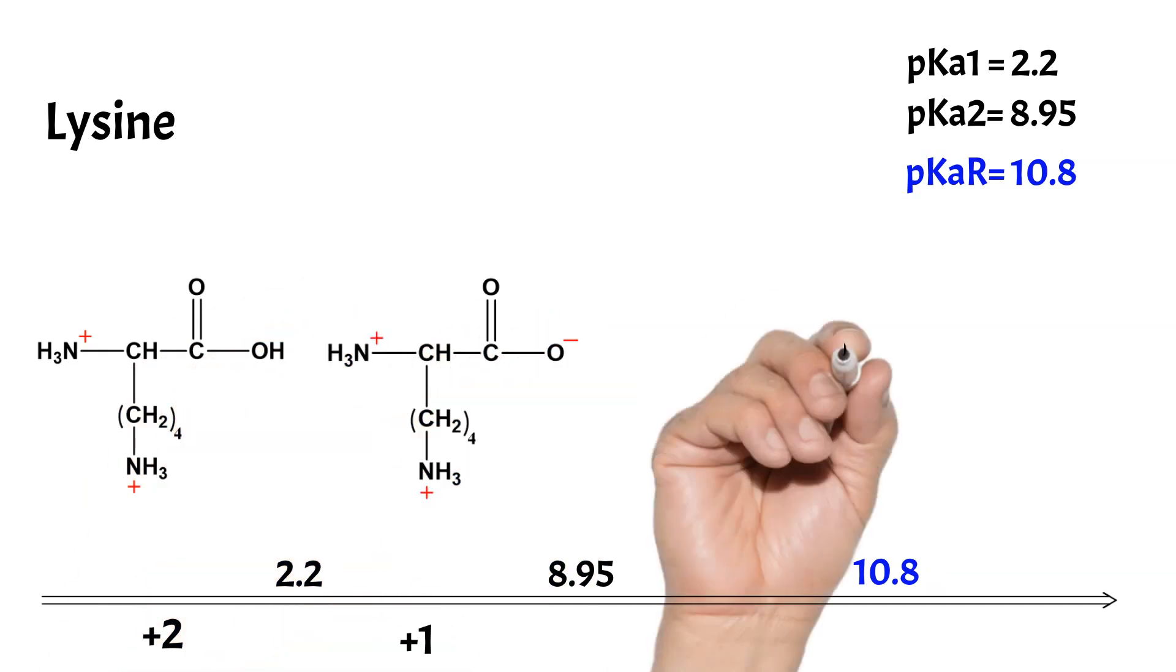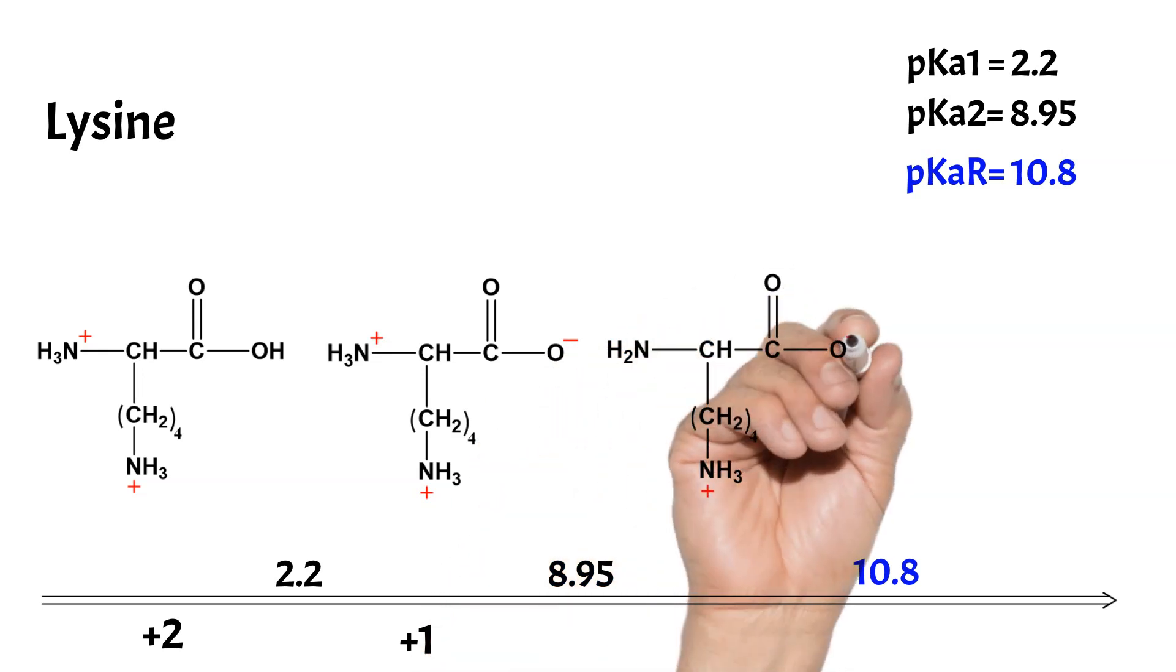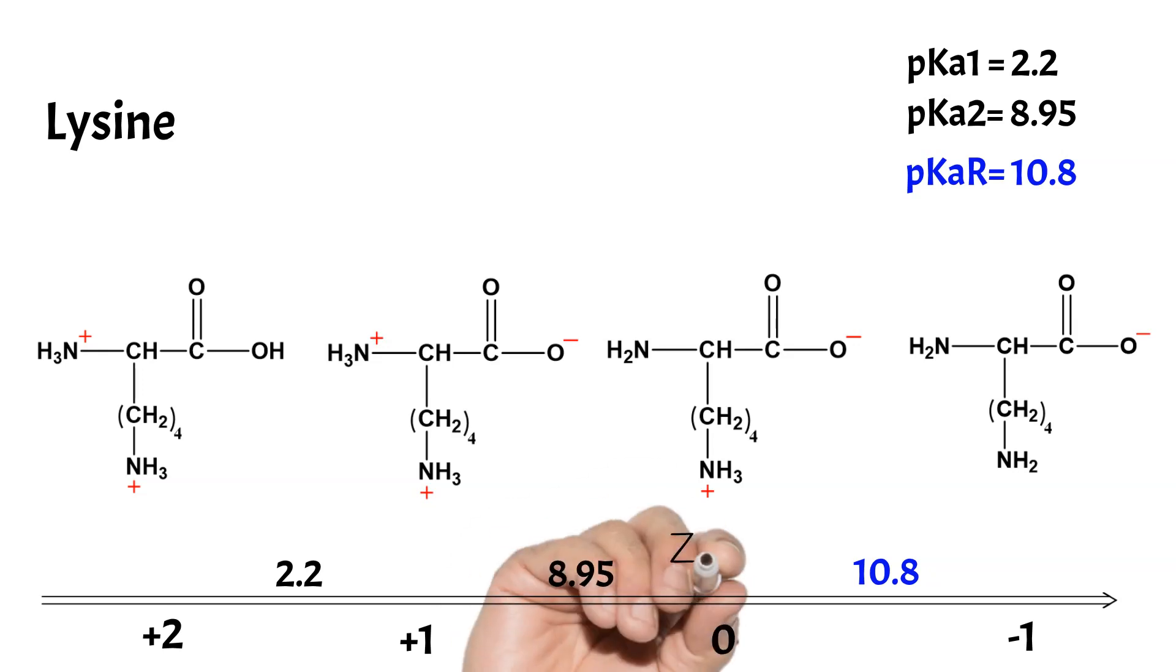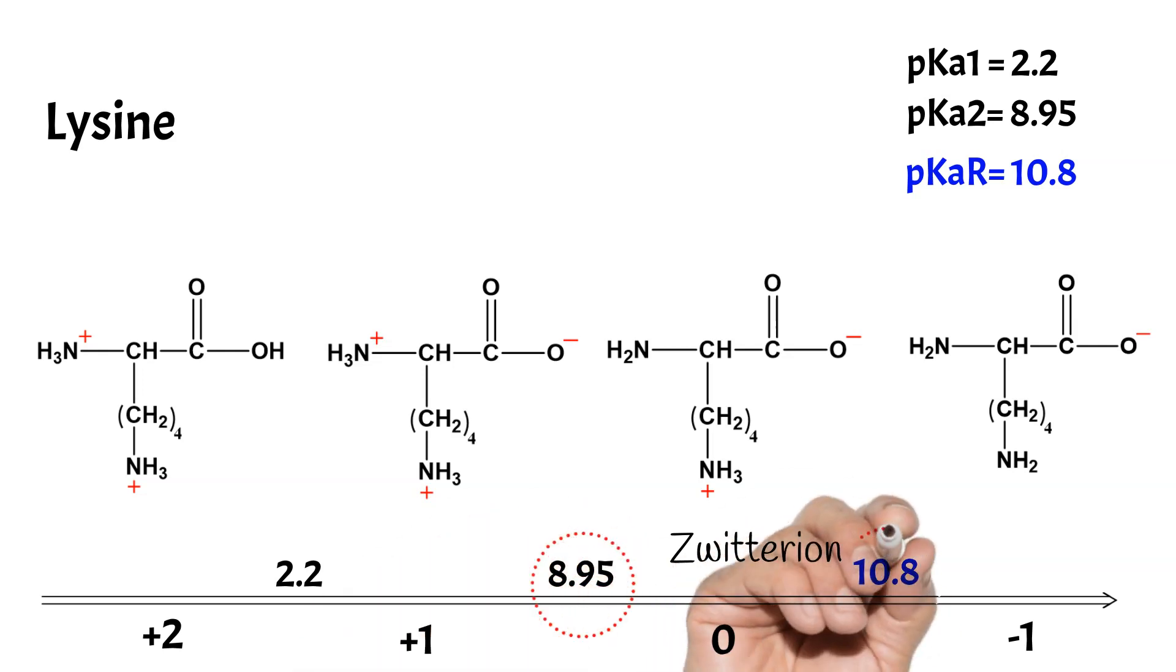The second dissociation is at pK2 for the alpha-amino group, where the net charge becomes zero. And at pH equal to pKr, the side chain amino group loses its proton and the net charge becomes minus one. The zwitterion here is between the pK values for the amino groups, the pK2 and pKr. This is also the case for the basic amino acids with two amino groups.